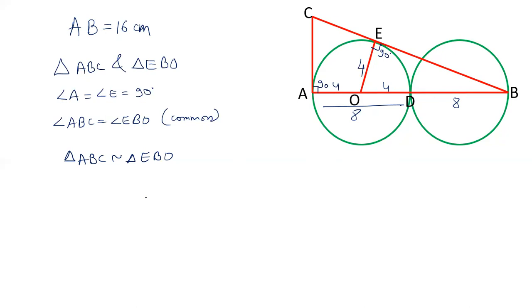Since the two triangles are similar, the ratio of their corresponding sides is the same. Taking the sides opposite angle B: AC corresponds to OE. The sides opposite the 90-degree angles give hypotenuse BC corresponding to OB. The third side AB corresponds to BE.